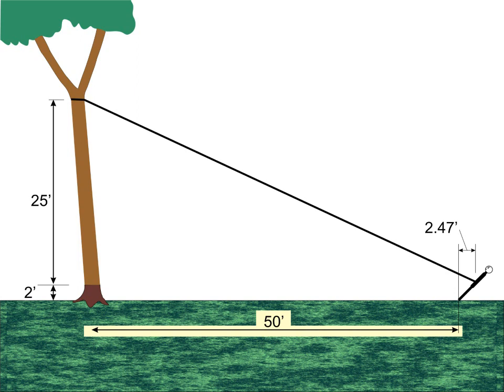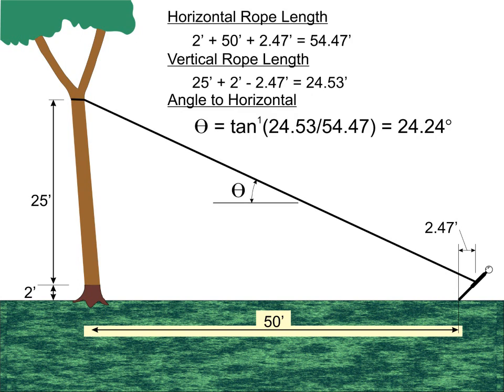That end of the rope is also 2.47 feet above the ground. Let's assume a somewhat average, medium-sized tree with its center of gravity at a height of 25 feet above the back cut and that it is leaning back by just 2 feet at that height. That lean works out to just over 4.5 degrees. Now let's do a bit of trigonometry to find the angle of the rope, which works out to be 24.24 degrees.